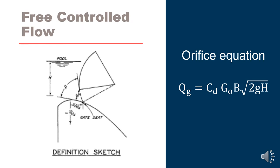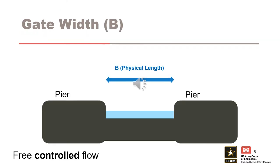Spillway discharge for a free controlled flow condition can be calculated using the basic orifice flow equation, where the discharge is a function of an orifice discharge coefficient, the opening of the spillway gate, the width of the spillway gate, the coefficient of gravity, and the head acting at the center of the spillway gate opening. When calculating free controlled flow for a gated spillway, the spillway gate width should be entered as the actual physical width of the spillway gate, because the effects of the pier and abutment contraction have already been accounted for in the published discharge coefficients.